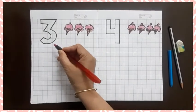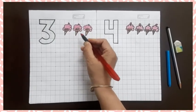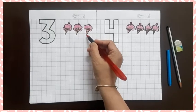3. How many ice creams? 1, 2, 3. 3 ice creams.